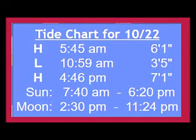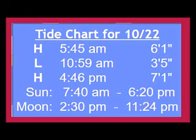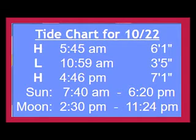For 10/22, you can see that high tide is about 5:45 a.m. at about 6 feet, and low tide is about 10:59 a.m. going down to about 3.5 feet. So the tidal fluctuation from high to low is only about 2.5 feet, which is pretty low.